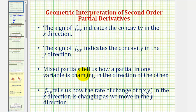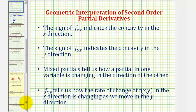The mixed partial derivatives tell us how a partial derivative in one variable is changing in the direction of the other. We can also say that the mixed partial derivative with respect to x and then y tells us how the rate of change of f in the x direction is changing as we move in the y direction. I hope you found this helpful.